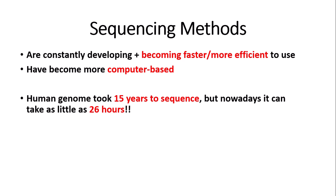In the Human Genome Project, the human genome took 15 years to sequence — a very, very long time. But nowadays it can take as little as 26 hours, so it's much, much quicker.